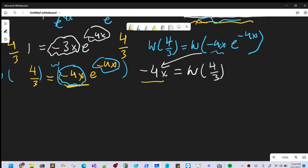So we're going to have minus 4x equals Lambert W of 4 thirds. What I can do now is just divide by minus 4 on both sides. We're going to have x equals Lambert W of 4 thirds over, let's put a negative up front, over 4. And that'll be one way to write our solution.